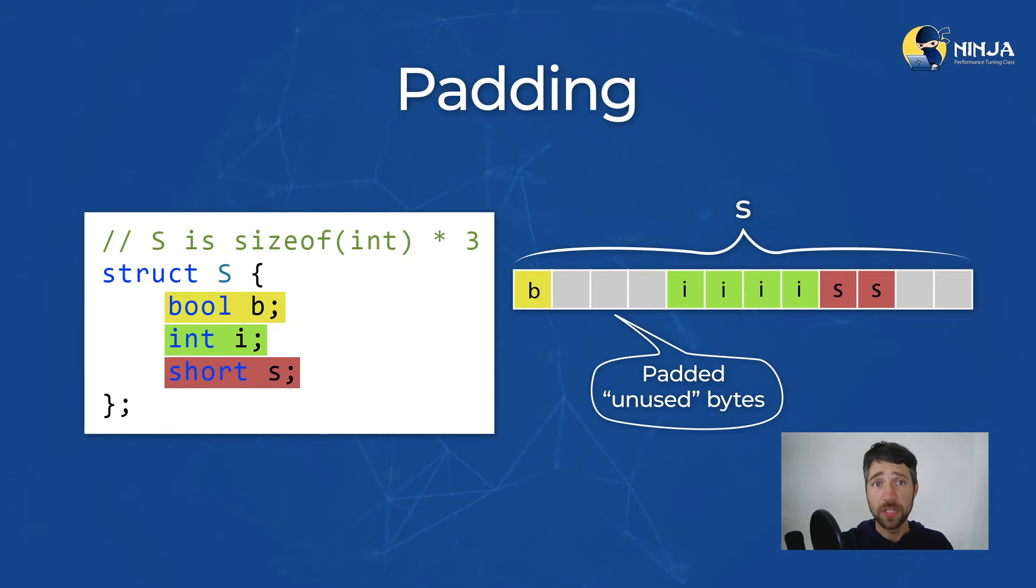The first technique is to remove unused bytes from your data structures. Suppose we have a C struct called S, which has a boolean, an integer, and a short field. Every object of struct S will occupy 12 bytes. This happens because the compiler inserts unused bytes called pads to allow efficient access to the members of struct S.